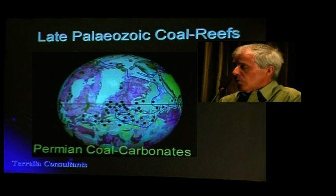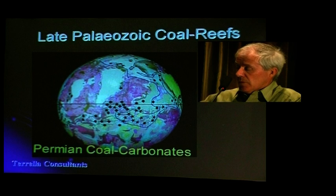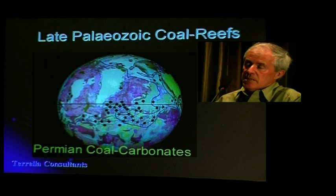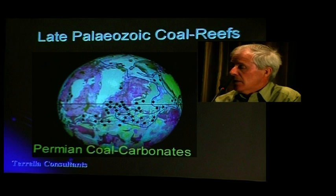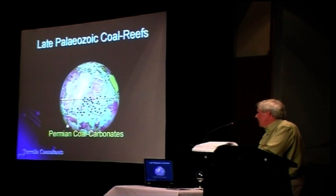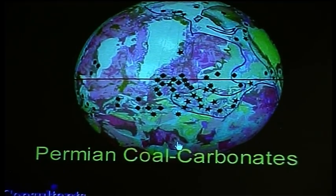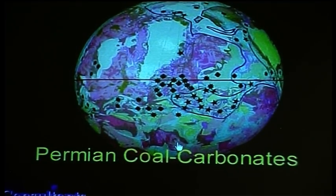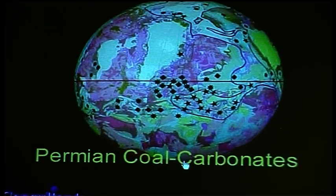What the data also shows is a shift — a northward shift in the data. It still parallels the equator, but there's a shift. You can explain this by the fact that at this time the Permian was quite a major ice age, lasting over 10 to 15 million years, with a permanent ice sheet in the southern hemisphere.